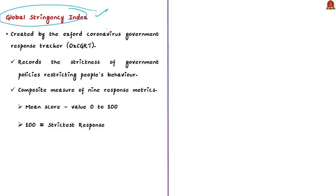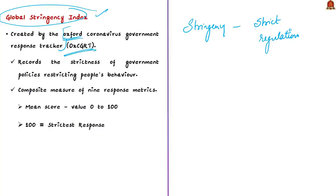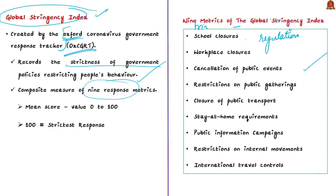To support their argument, the authors use findings from the Global Stringency Index, created by the Oxford Coronavirus Government Response Tracker (OxCGRT). This index records the strictness of government policies that primarily restrict people's behavior. It is calculated as a composite measure of nine response metrics including school closures, workplace closures, cancellation of public events, and restrictions on public gatherings. The score is the mean of these nine metrics, each taking a value between 0 and 100. A higher score indicates a stricter response — a score of 100 implies the strictest response.